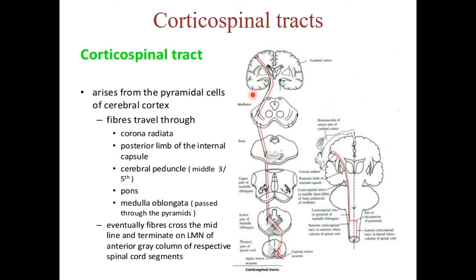The signal starts in the brain and descends; at the level of the medulla it crosses to the opposite side and continues as a lower motor neuron until it exits the spinal cord through the anterior horn cell of the corresponding level.